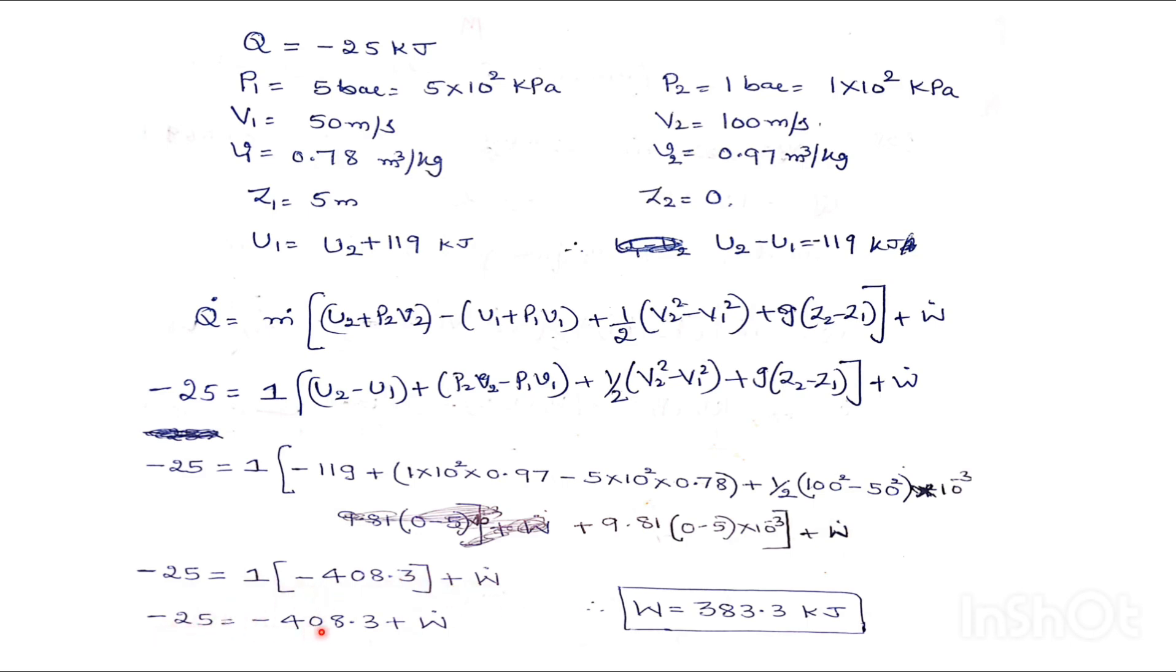So minus 25 minus 408.3 plus W dot. Therefore, W dot will be equals to 383.3 joules. This is the work done here.